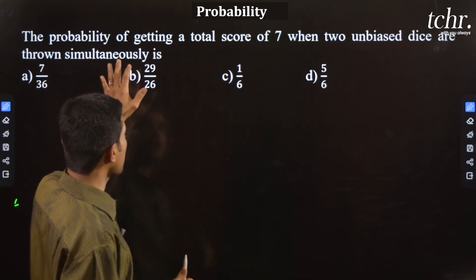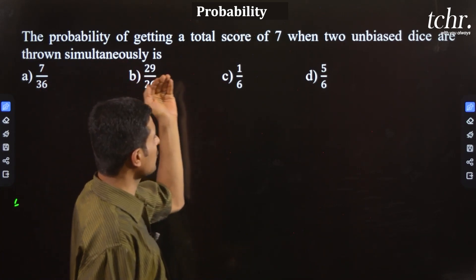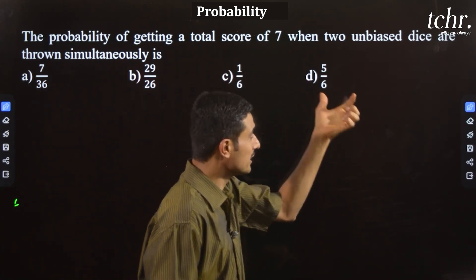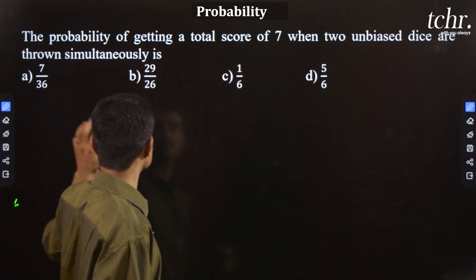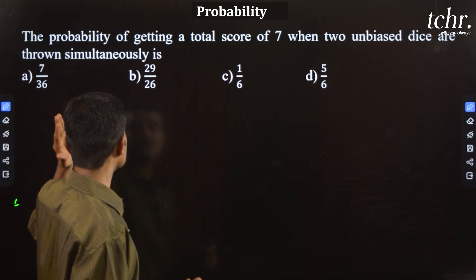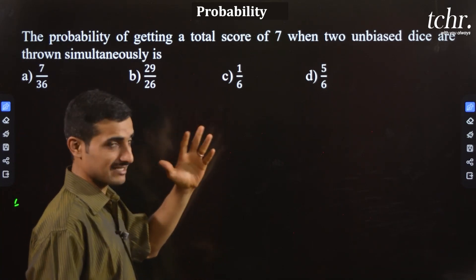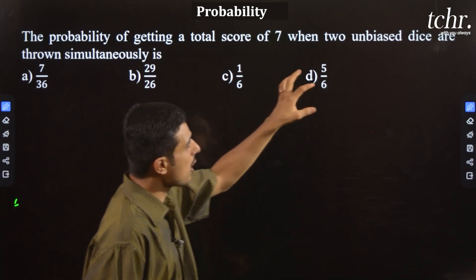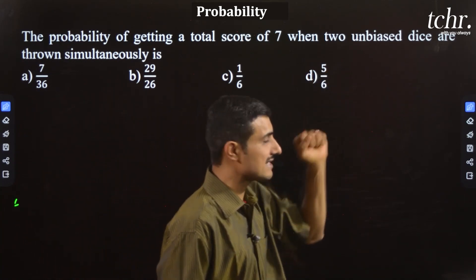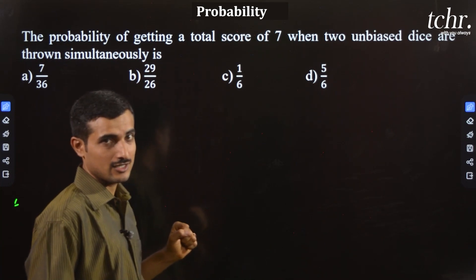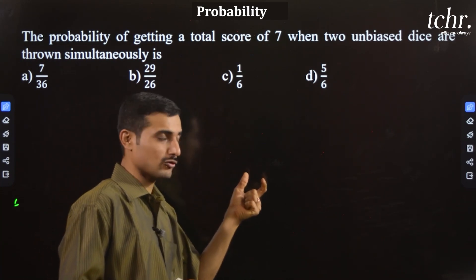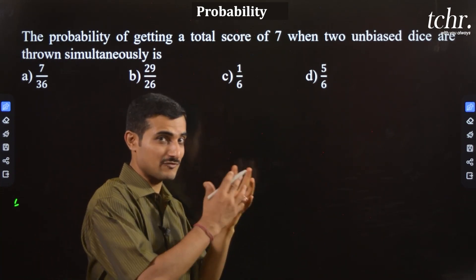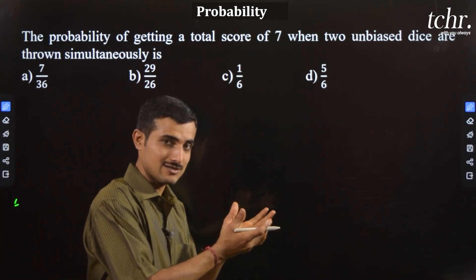The probability of getting a total score of seven when two unbiased dice are thrown simultaneously. Now, two unbiased dice — one die has six faces: one, two, three, four, five, six.